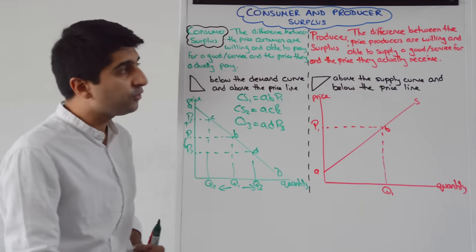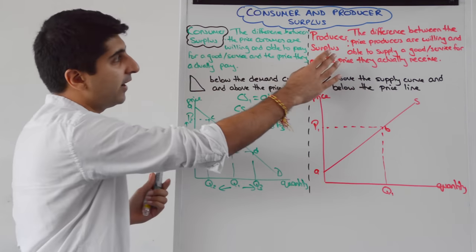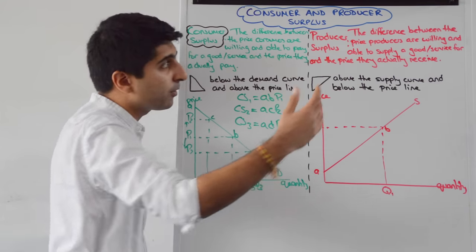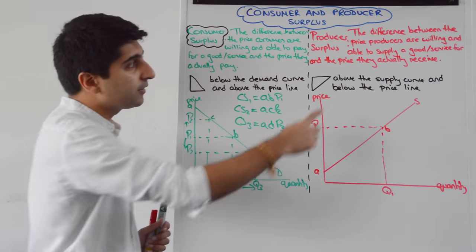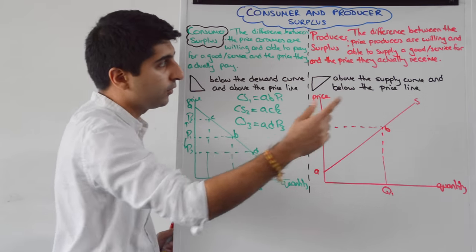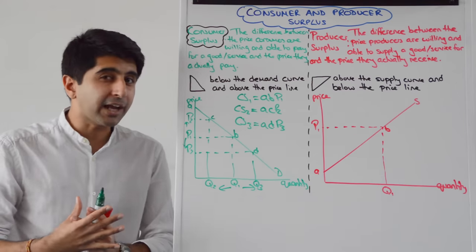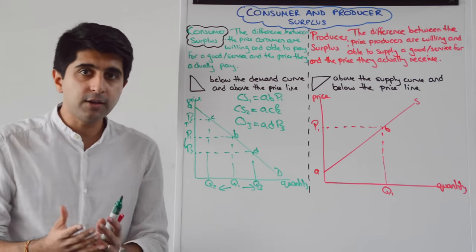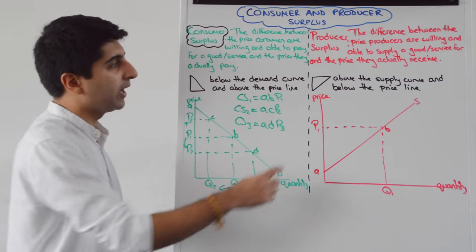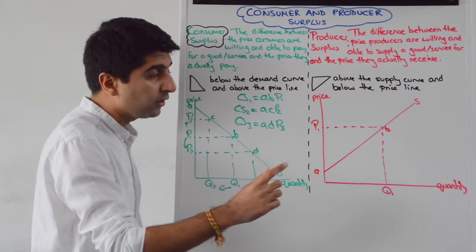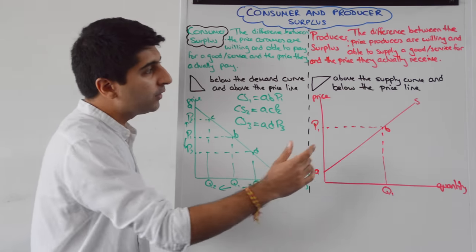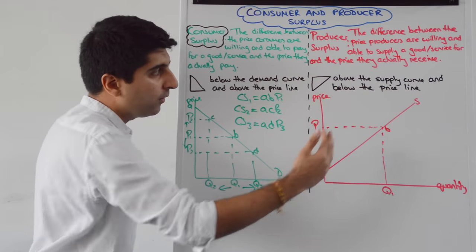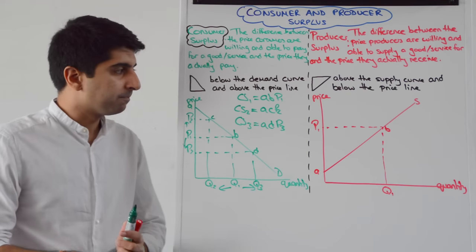What about producer surplus? Producer surplus is defined as the difference between the price producers are willing and able to supply a good or service for and the price that they actually receive. It's usually a triangle shape, found above the supply curve and below the price line.